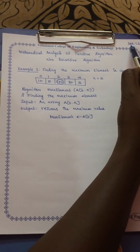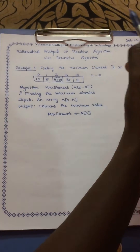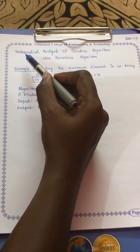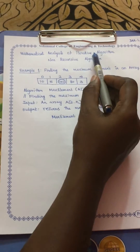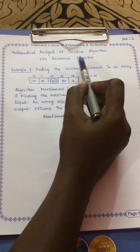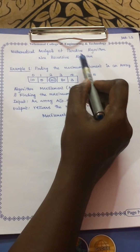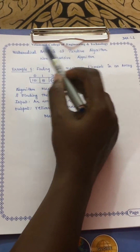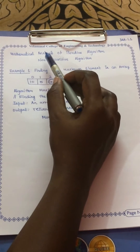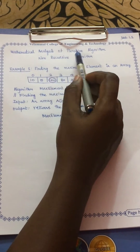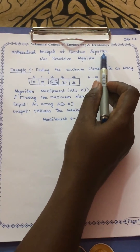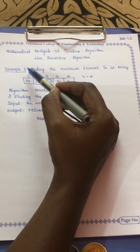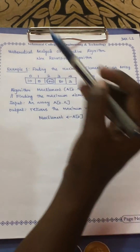This is my first lecture in DAA. Today we are going to learn how to analyze the iterative algorithm. An iterative algorithm is otherwise called a non-recursive algorithm, and we are going to know how we can mathematically analyze it. I will explain this iterative algorithm mathematical analysis using four examples.